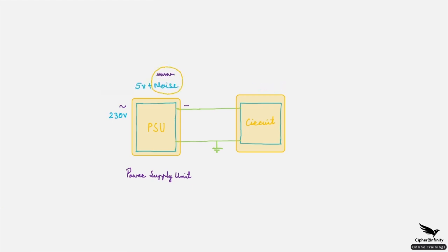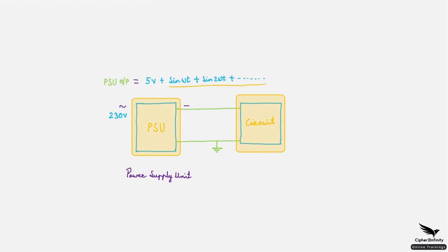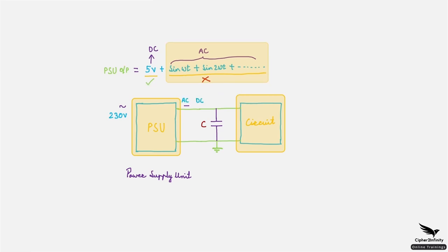This noise is actually nothing but AC components. AC components are all the signals or frequencies present in the power signal other than the DC component. So from the power supply we are getting both DC as well as AC components. But to power our circuitry we just want the DC components — we don't want the AC components. So we need to eliminate these AC components from the power line. In such cases we use a capacitor. This capacitor will bypass AC components towards the ground, and on the output side of the capacitor we will get a pure 5V DC. This is how the capacitor eliminates the noise.